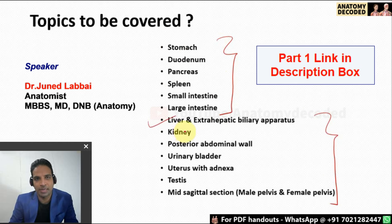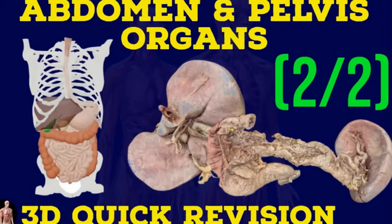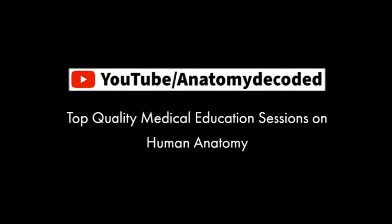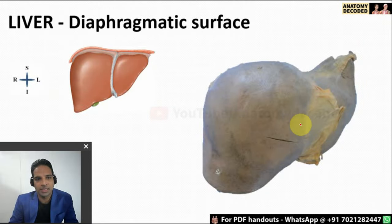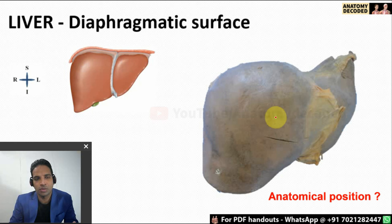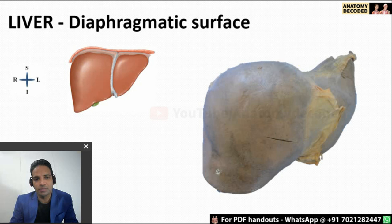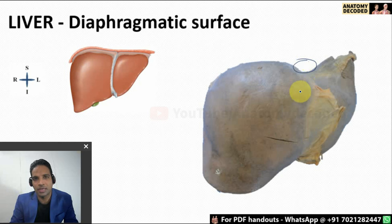Let's begin with the liver and the extrahepatic biliary apparatus. Here we can see the liver viewed from the anterior aspect. Whenever a specimen of liver is given to you, you should know how to hold it in anatomical position. You can use a plane forcep and put it in the inferior vena cava on the posterior aspect of the liver, and hold it straight in the right hand, as the liver is more towards the right side.